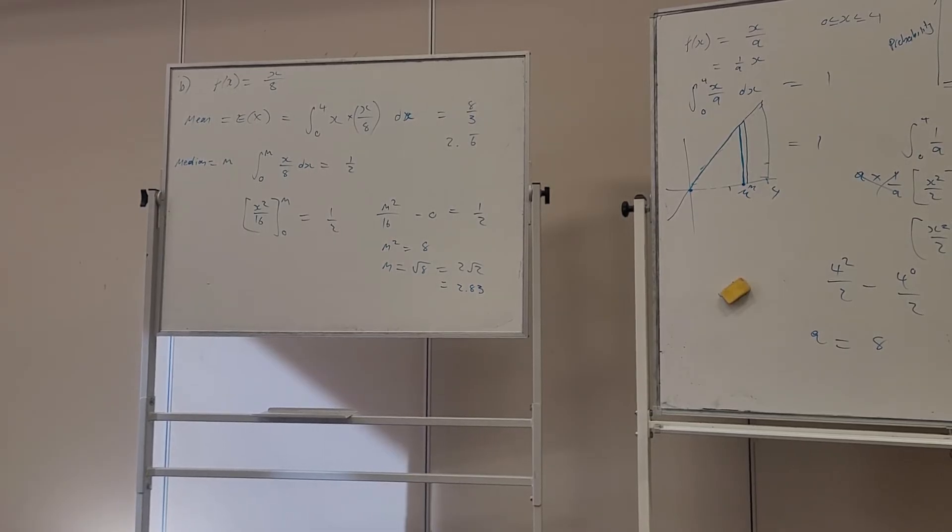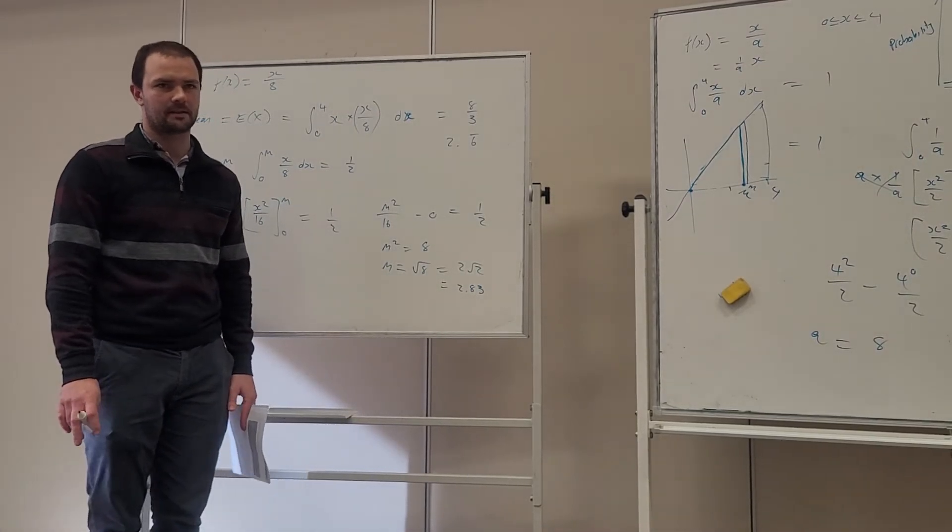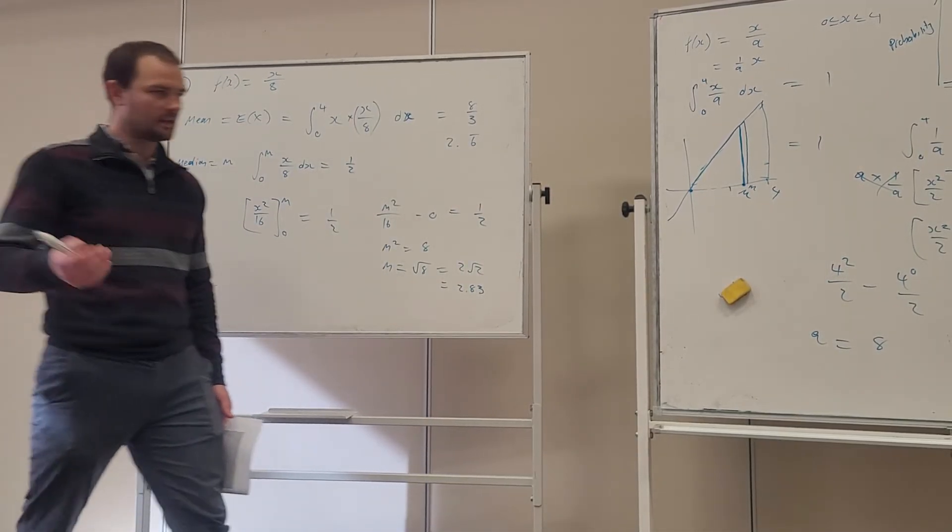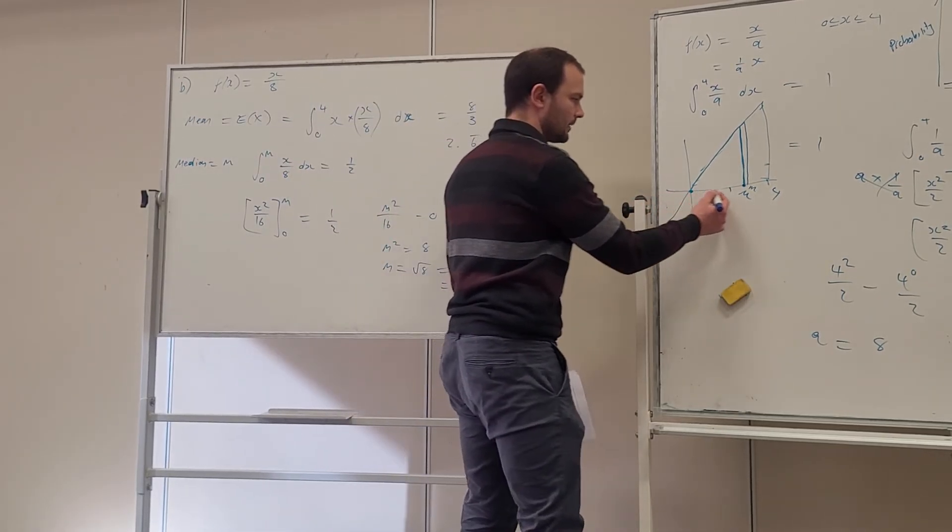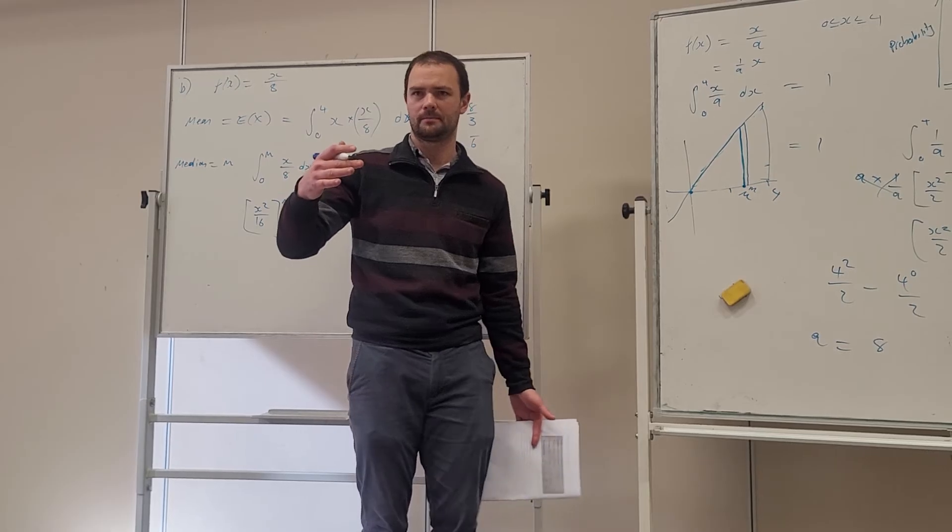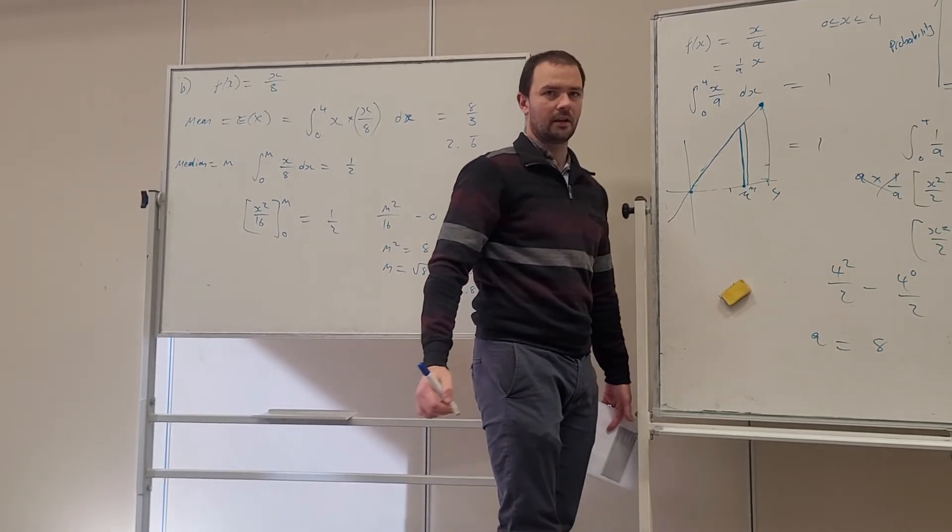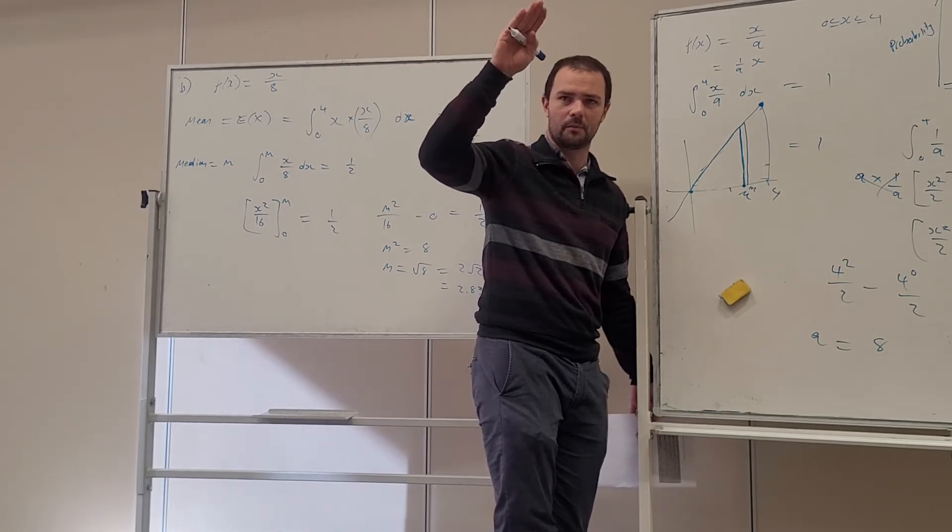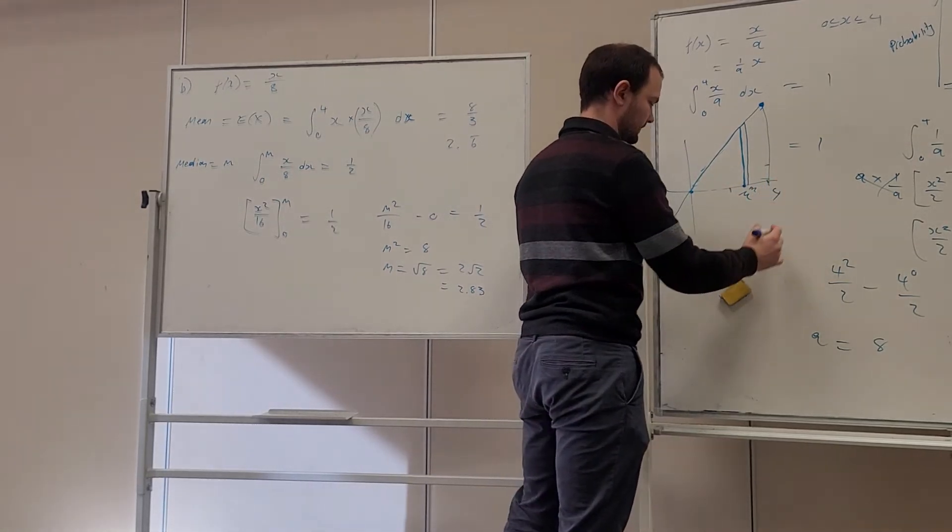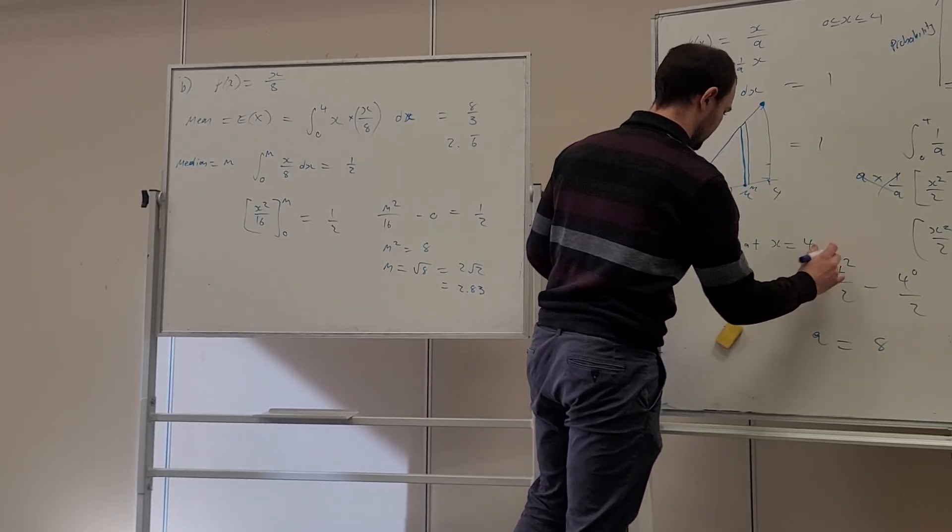And then the mode is the value of x which maximizes f of x. So what that means is, along here, along this curve, what is the x value of the highest point? So here this is the maximum point on it, isn't it? So the value with the highest probability, it occurs at x is 4. So the mode at x is 4.